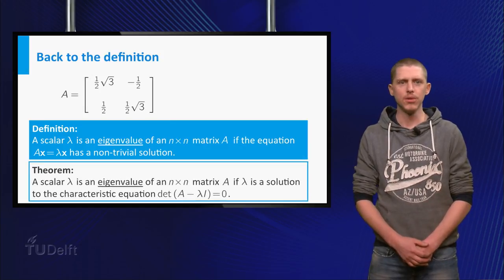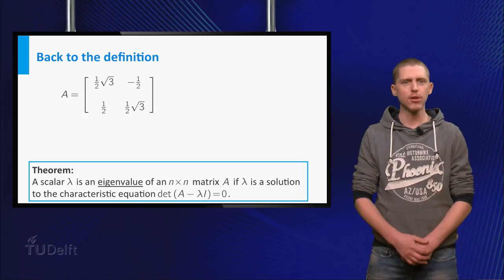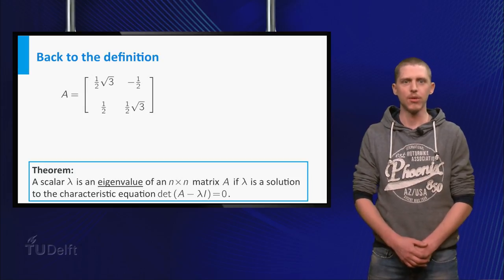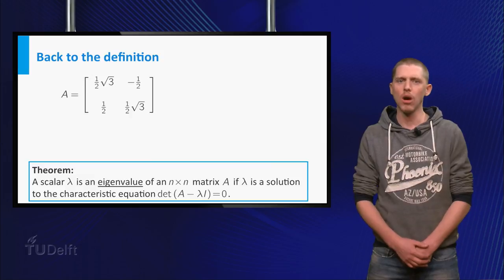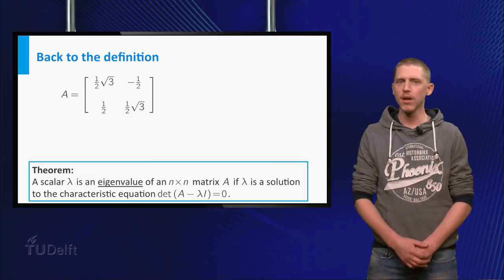You can reformulate this to an eigenvalue lambda of an n by n matrix A is a solution to the characteristic equation of A. So if you include all complex solutions of this equation, A can have complex eigenvalues.